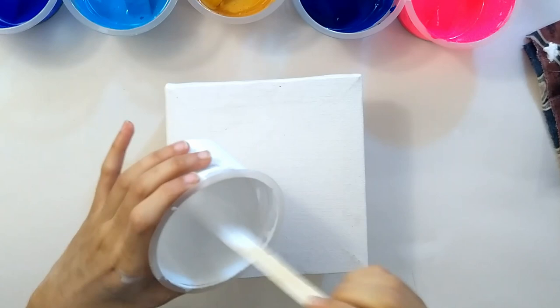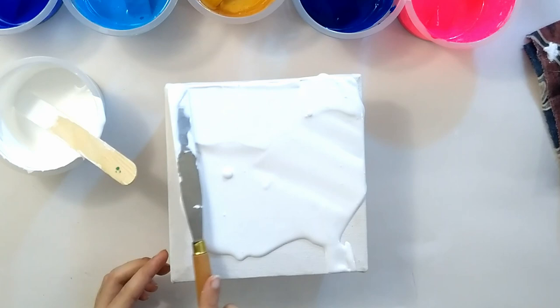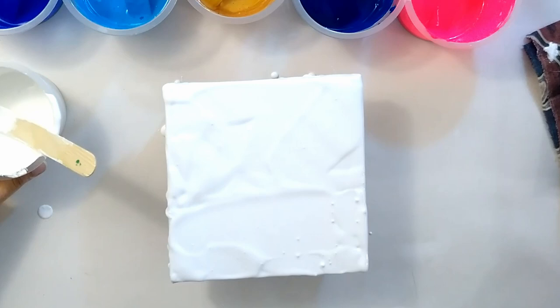Now spreading white as my base color to cover the whole canvas properly. Then pouring all the colors randomly over the white.